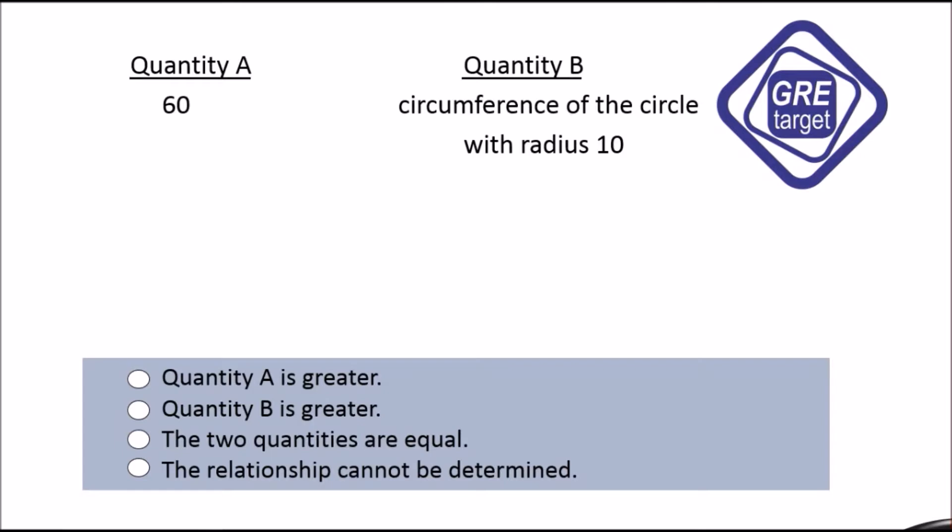Suppose quantity A has 60 and quantity B has the circumference of a circle with radius 10. We know that 60 is given for quantity A, so we have to find out quantity B.